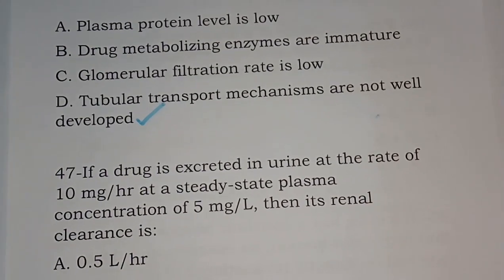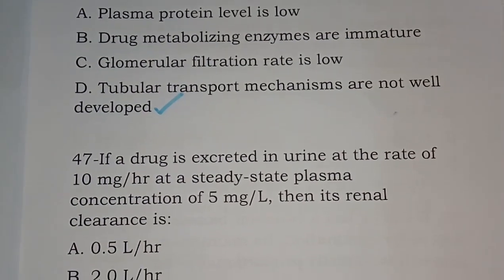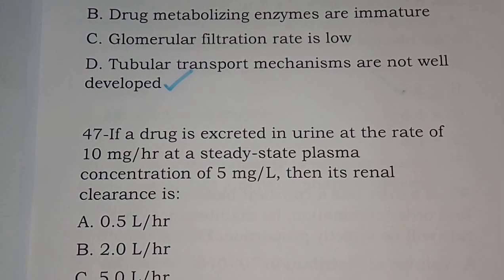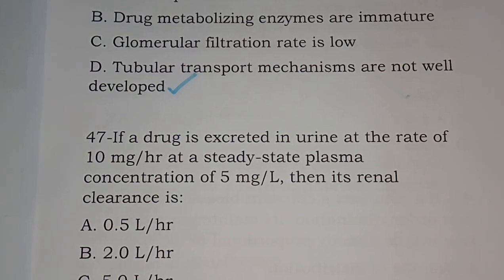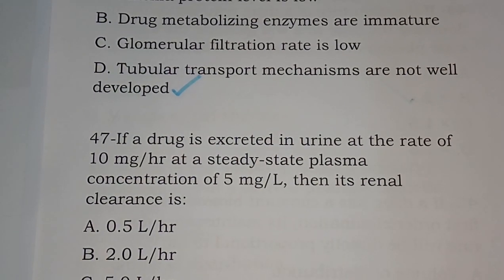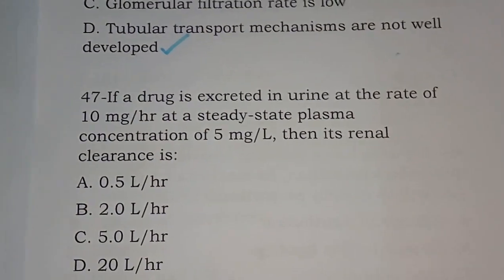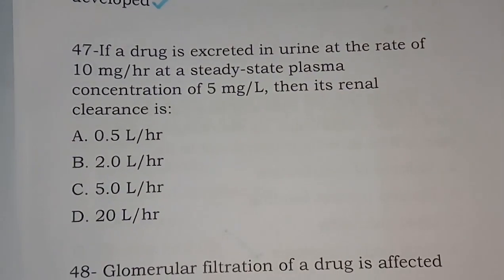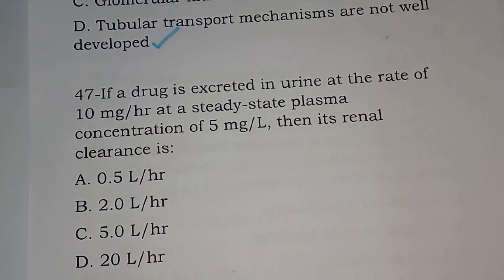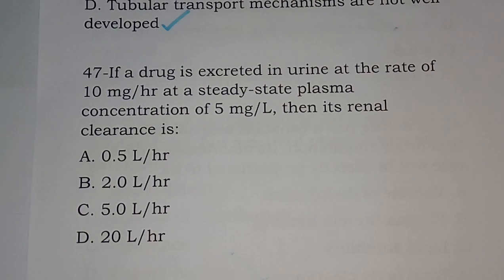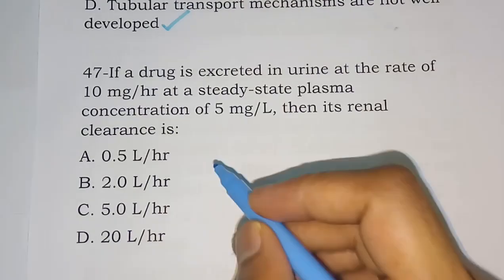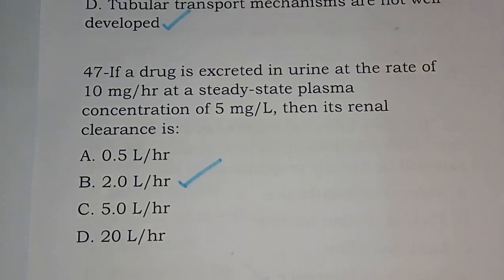Question 47: If a drug is excreted in urine at the rate of 10 mg per hour at a steady state plasma concentration of 5 mg per liter, then its renal clearance — you have to calculate this. If you don't know the calculation, please write in the comment section. The correct answer is option B, 2 liters per hour.